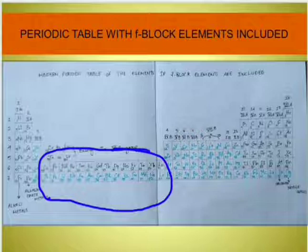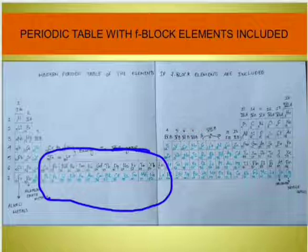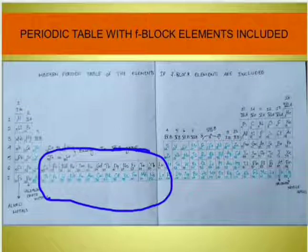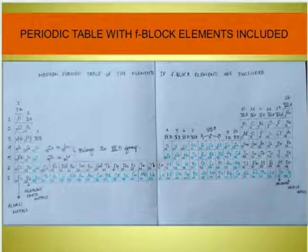So this is how the periodic table looks if the F block elements are placed along with the other group elements. It is very difficult — can you see the element symbols? I have already used up the entire space of the paper and there is no room to write with large letters. This means it will be very difficult even in landscape mode on an A4 size paper. This is one reason for separating the F block elements and placing them at the bottom.